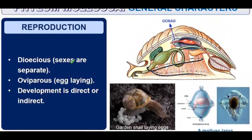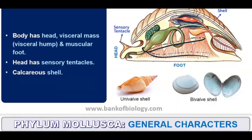Reproduction: sexes are separate, meaning dioecious. Development can be direct — no larval stage — or indirect, where larval stages are present.